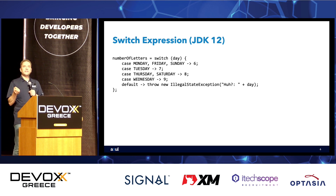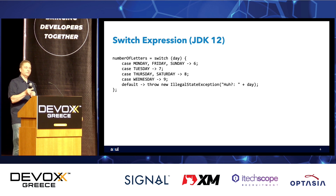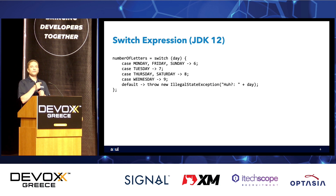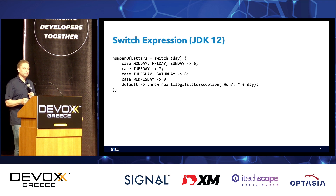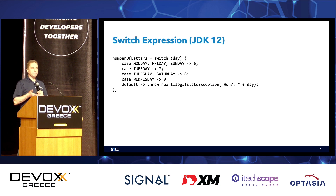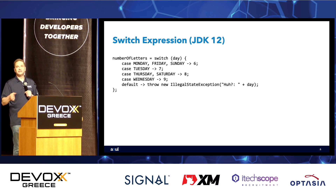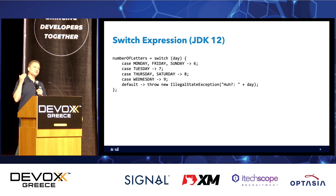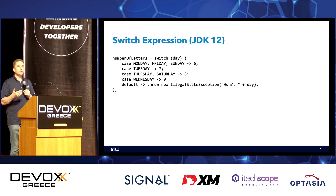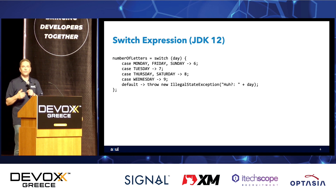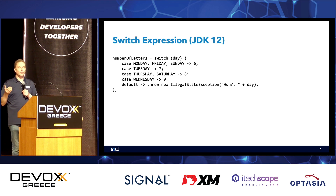One great thing is that we can eliminate the problem of forgetting to assign a value, because now we only assign the value once — `numberOfLetters` is the result of the switch expression. The compiler checks that for each set of cases we either return a value or throw an exception. In terms of syntax, we now have `case MONDAY, FRIDAY, SUNDAY` — a comma-separated list. We borrowed the arrow operator from lambda expressions, and the right-hand side is the value returned or the exception thrown.